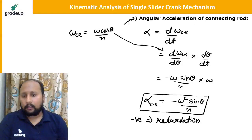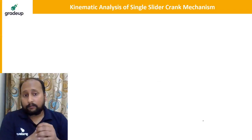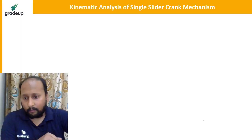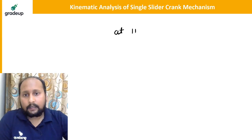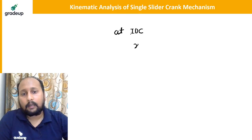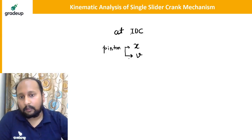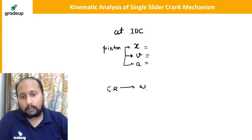This completes the kinematic analysis of the single slider crank mechanism. Let me ask you some questions. At IDC (theta = 0): what are the values of displacement x, velocity v, acceleration a, angular velocity ωcr, and angular acceleration αcr of the connecting rod?